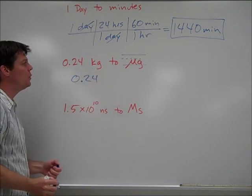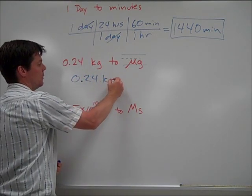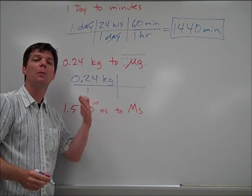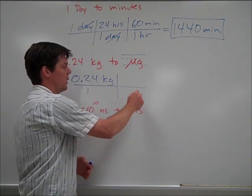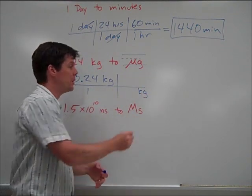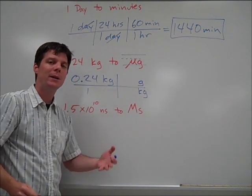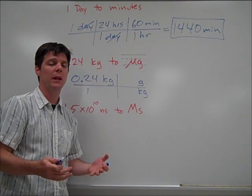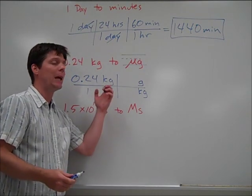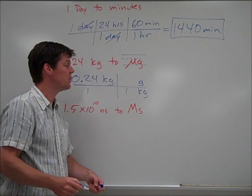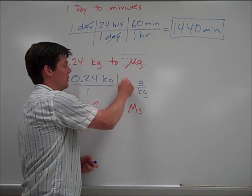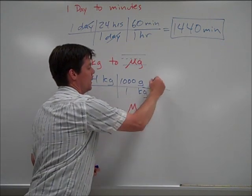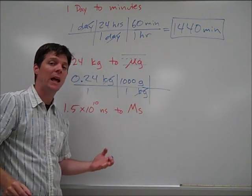Start out with 0.24 kilograms. Make that a fraction, divide by one. Next step. Let's go from kilograms to grams. Kilograms, I want to get rid of. Grams is the unit I want to convert to. Now, we need to know the relationship between grams and kilograms. You do need to, in chemistry, memorize these relationships. Everybody should know them. In one kilogram, because kilo means 1,000, there are 1,000 grams. So again, in one kilogram, there are 1,000 grams.